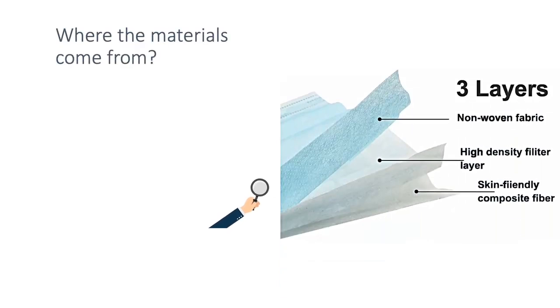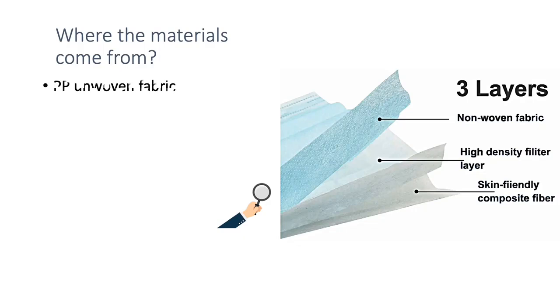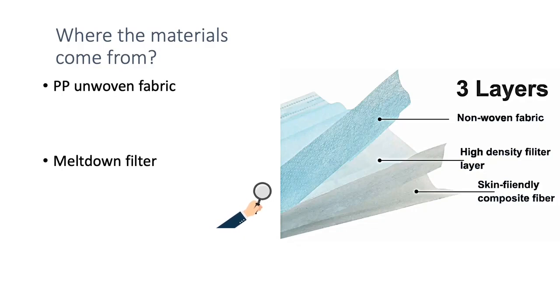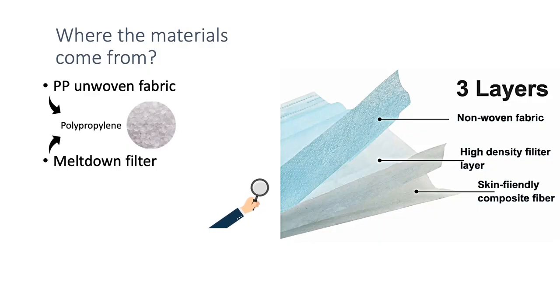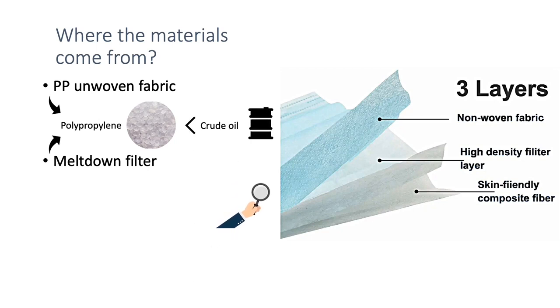Back to our topic. So, what are these materials made from? A simple anatomy shows the structure: non-woven fabric, medium filter, and the innermost composite fiber. As for the first two layers — the unwoven fiber and meltblown filter — they come from the same source: polypropylene, which is one type of plastic material extracted from crude oil.